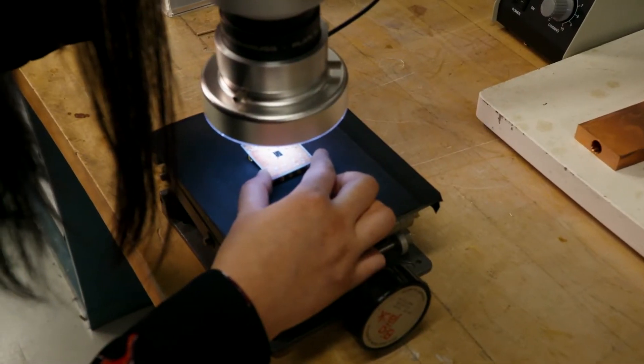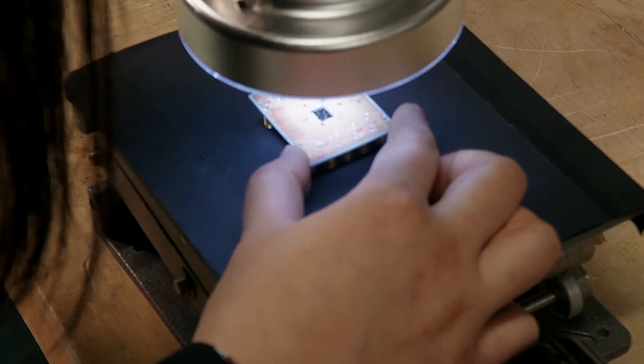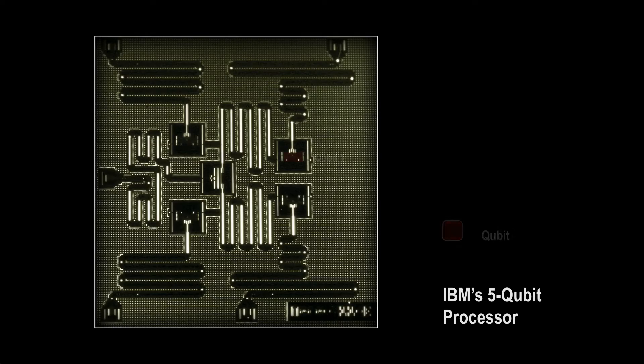So let's see what this device looks like. Here, we have five superconducting qubits. Each qubit consists of a junction shunted by a large capacitor. You can think of this circuit as a nonlinear LC oscillator, and the nonlinearity comes from the junction inductance.